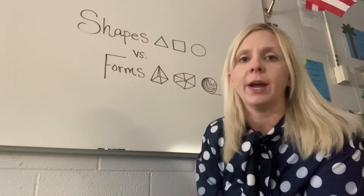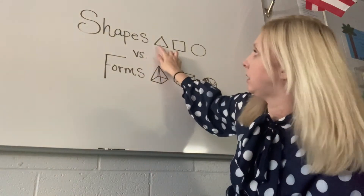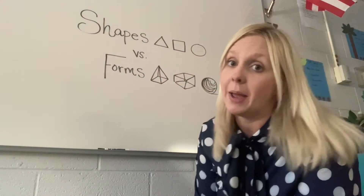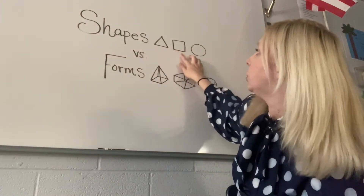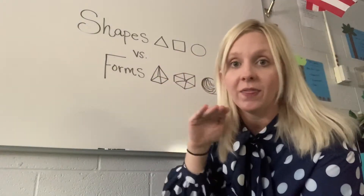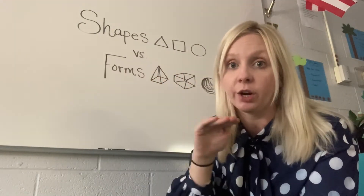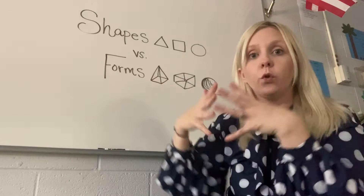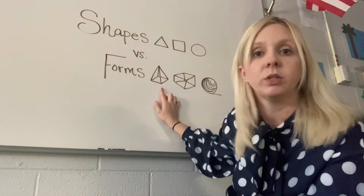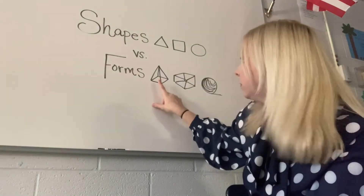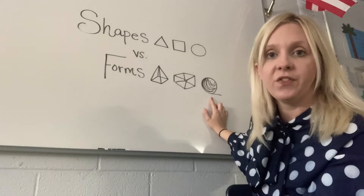Shapes are 2D, which are flat objects. These are all examples of geometric shapes which have a name. This is a triangle, a square, and a circle — and they're flat. If we were to hold them up and look at them on their side, they would look flat. But forms pop out. They're three-dimensional, or 3D, and here are some examples of geometric forms: a pyramid, a cube, and a sphere.